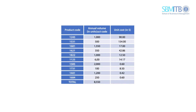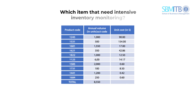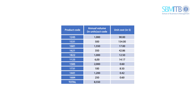Let's take a look at an example of the ABC analysis calculation. Chico is a company that produces 10 varieties of chips. They want to know which items need intensive inventory monitoring. Here is the list of 10 products produced by Chico with the annual volume and unit cost for each product.